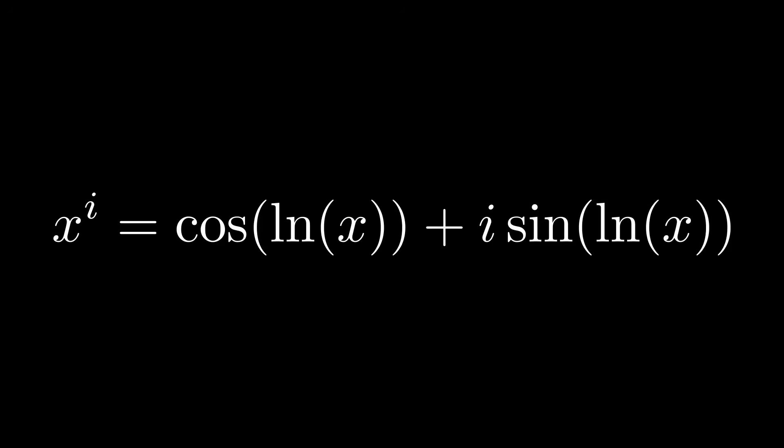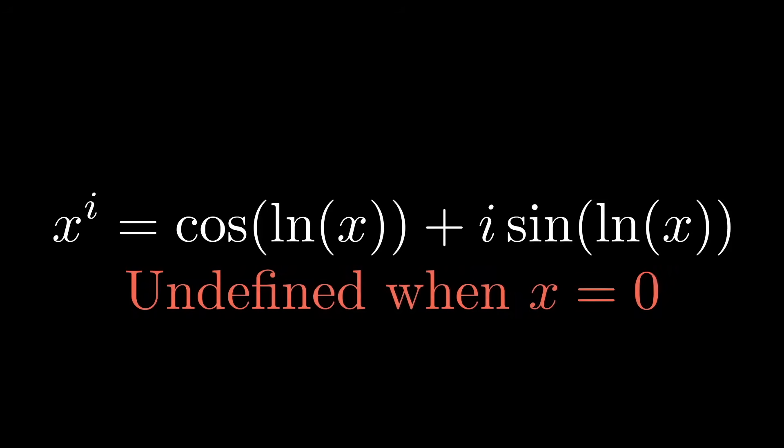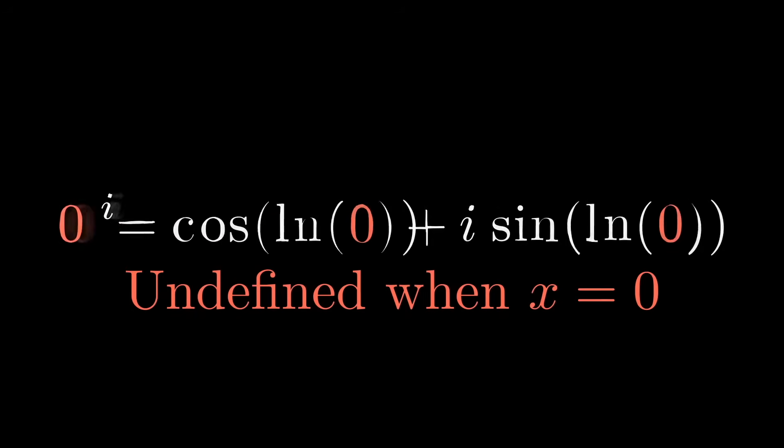And if x equals zero, this is definitely undefined. Even for the complex logarithm, natural log of zero is undefined. Yet even if things like this are undefined, we can try to figure out what they should be by getting close and using limits. We want to approach zero here and try to figure out what zero to the i would be if it were defined.